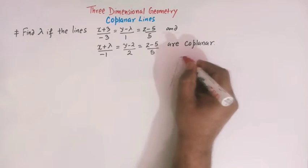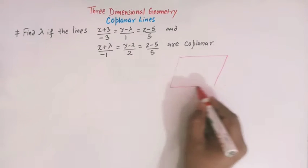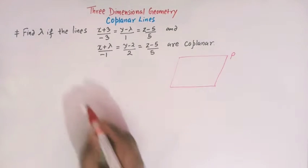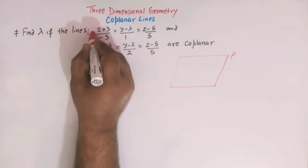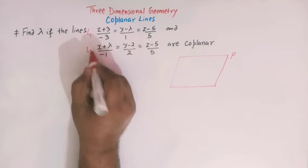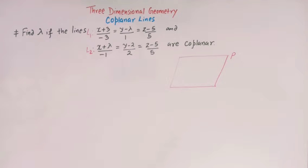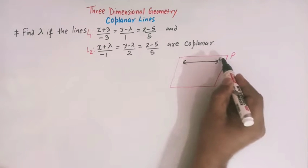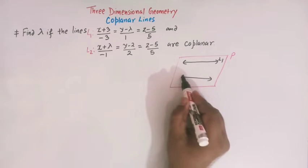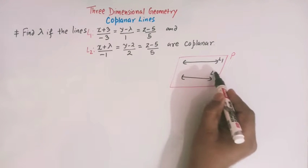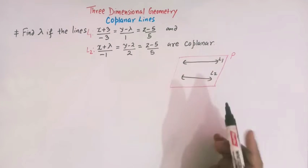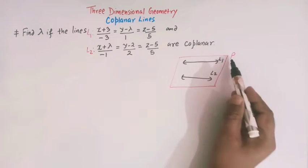Coplanar lines are those lines which lie on the same plane. Suppose this is plane P. We denote the two lines as L1 and L2. These two lines are coplanar, meaning both of them lie on the same plane P.